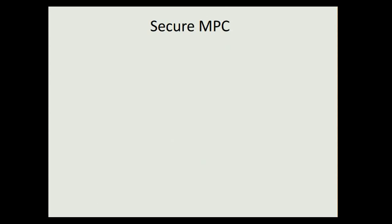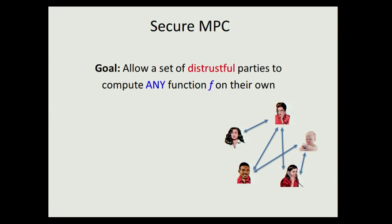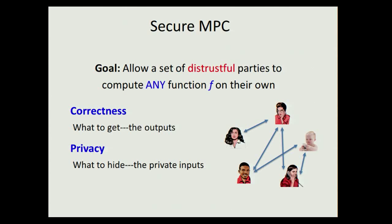As you have heard many times, the problem we're looking at is the secure multi-party computation problem. The goal here is to allow a set of mutually distrustful players to collectively, collaboratively compute any function on their own by just sending a few messages to each other. Two things we want to guarantee are: first, correctness — the output of the computation needs to be delivered correctly — and second, privacy — the private inputs of each player should remain hidden.